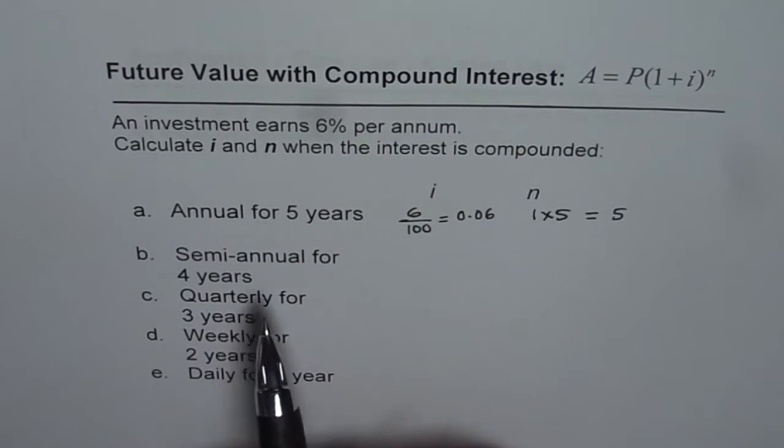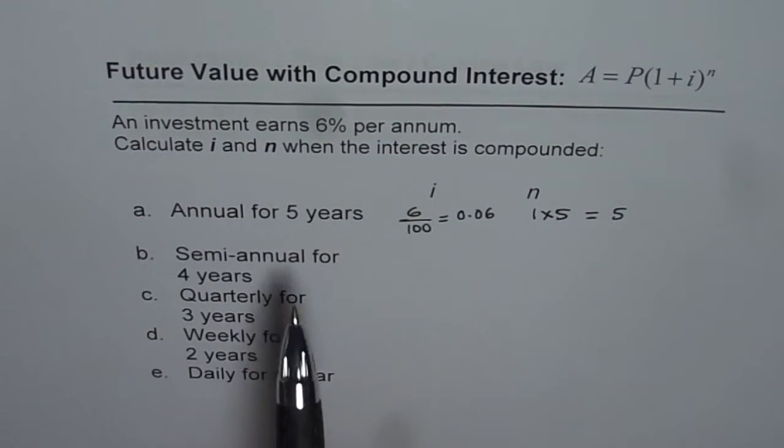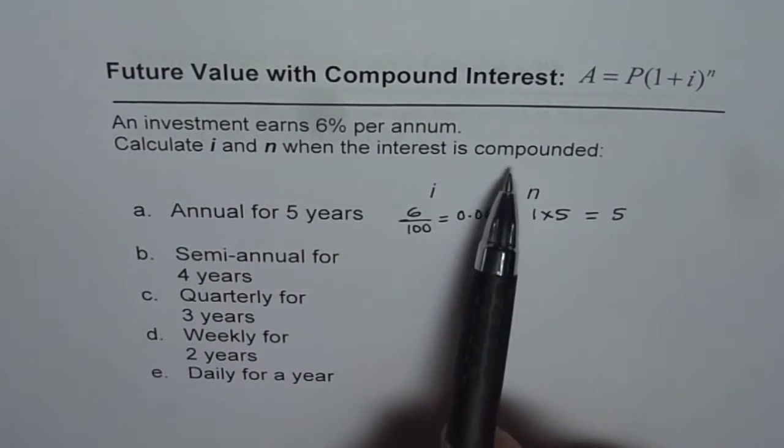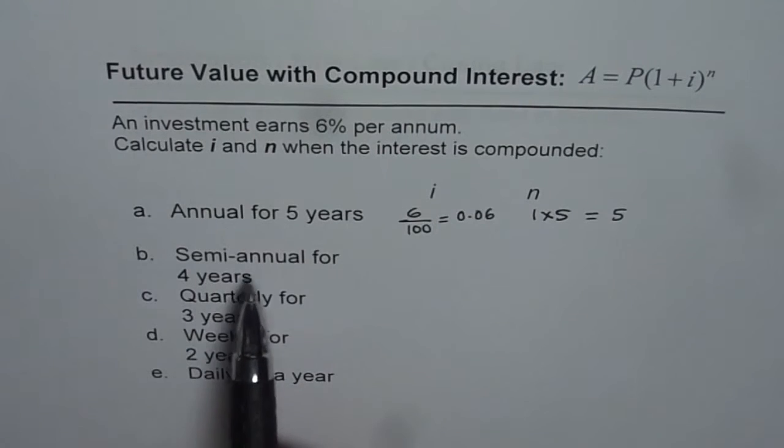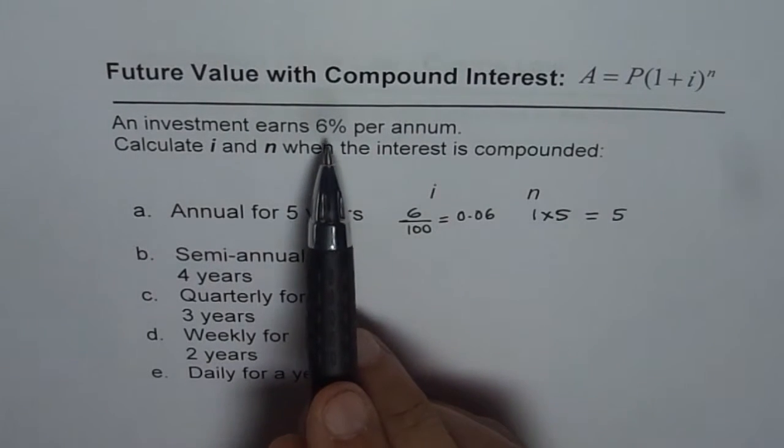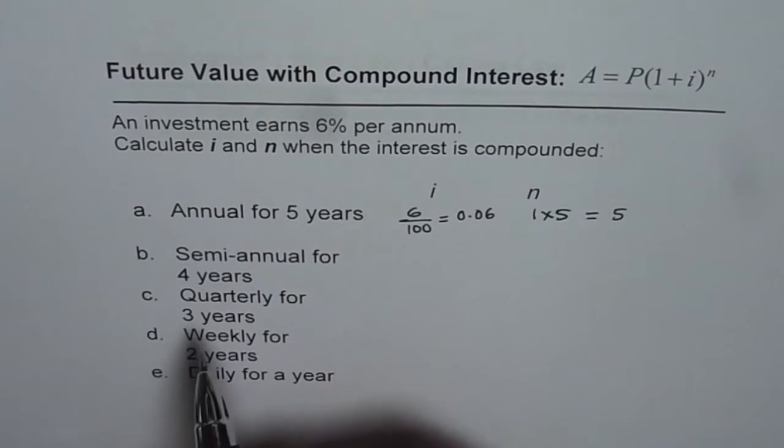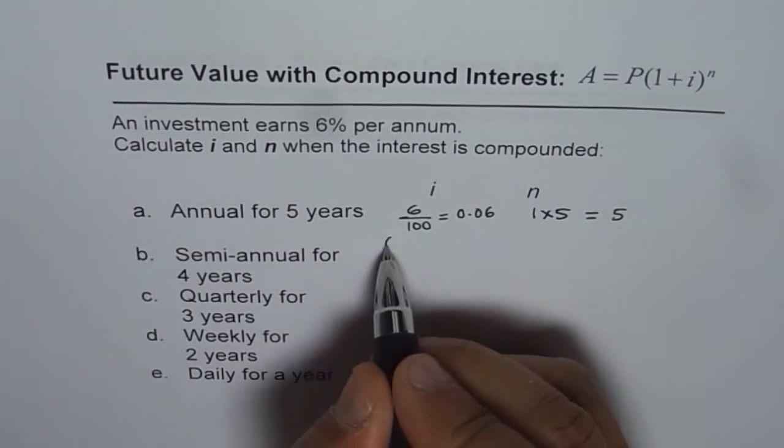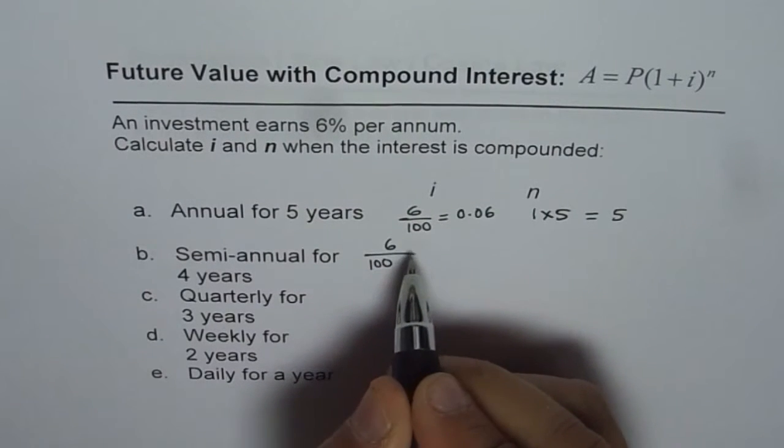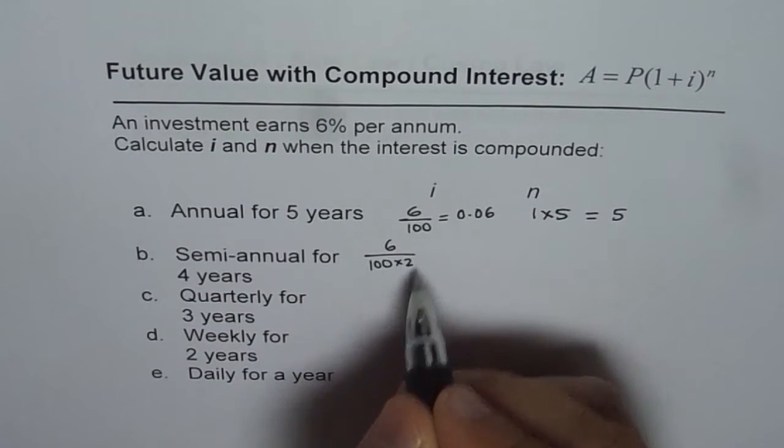Now let's look into the next option in which investment earns 6% per annum and is compounded semi-annually for 4 years. When we say semi-annually then it means twice a year. So this interest rate which is 6% per annum should be divided by 2. So what we get here to calculate i is 6%, and then you have to divide this by 2, or I could multiply the denominator by 2 times 1 over 2.